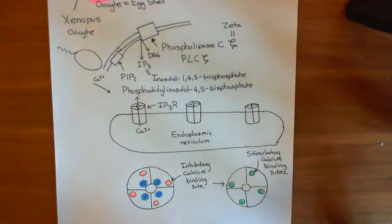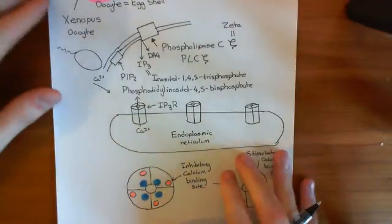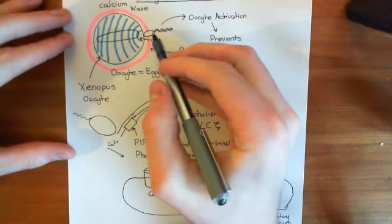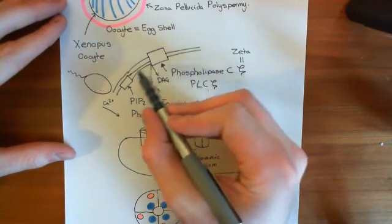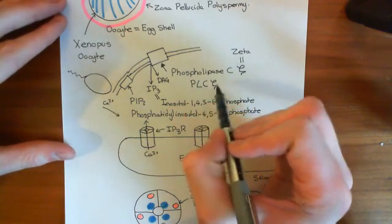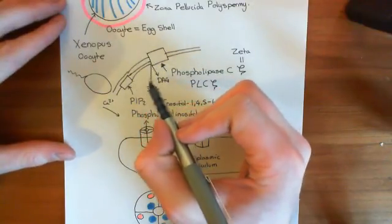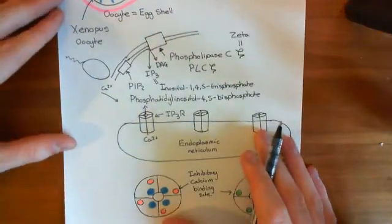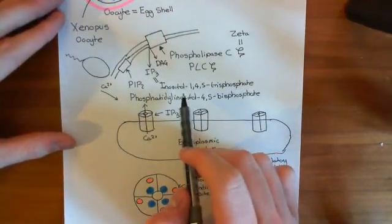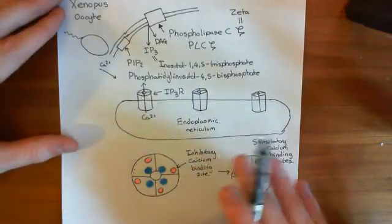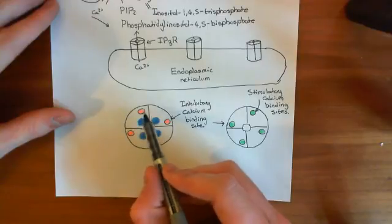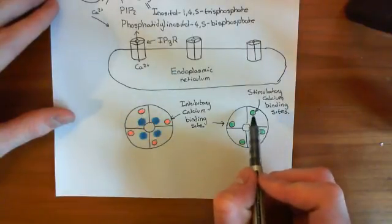Welcome to this third video on oocyte activation and the role of calcium waves in oocyte activation. So far, what we've discussed is that when the sperm makes contact with the oocyte, the sperm is believed to transfer phospholipase C of the zeta type into the membrane of the oocyte. Phospholipase C-zeta converts PIP2 into IP3 and diacylglyceride. IP3, or inositol 1,4,5-trisphosphate, then binds to the IP3 binding sites on the IP3 receptors, making unavailable an inhibitory calcium binding site and making available a stimulatory calcium binding site.